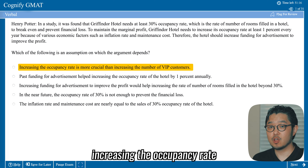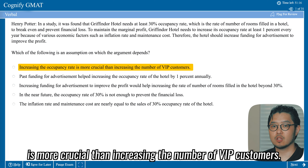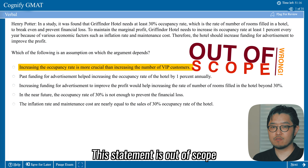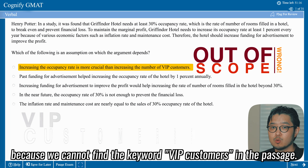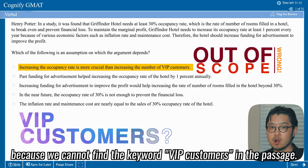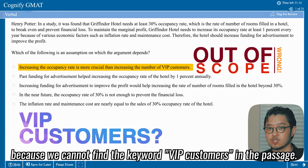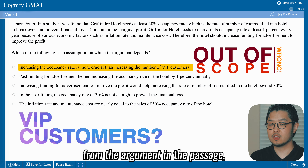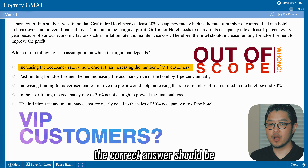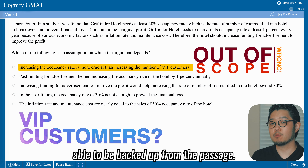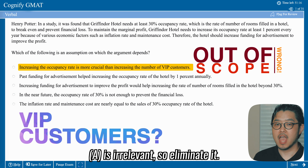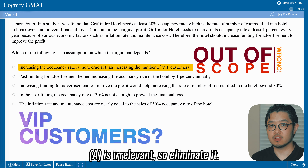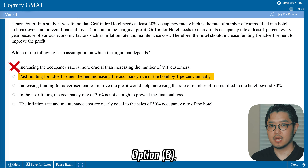Option A: 'Increasing the occupancy rate is more crucial than increasing the number of VIP customers.' This statement is out of scope because we cannot find the keyword 'VIP customers' in the passage. Since we need to establish an assumption from the argument in the passage, the correct answer should be backed up by the passage. A is irrelevant, so eliminated.